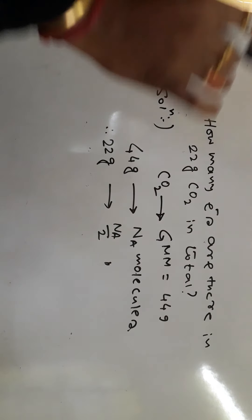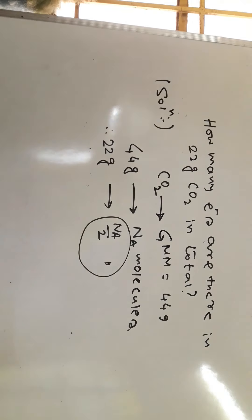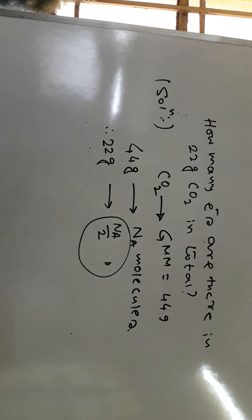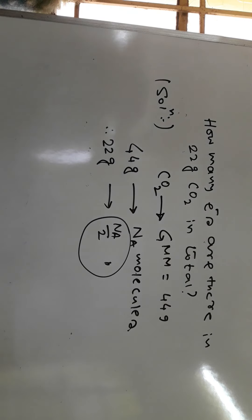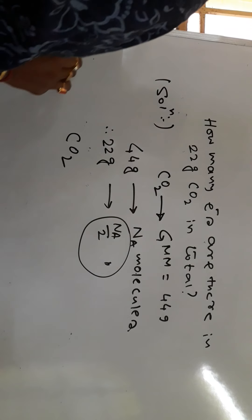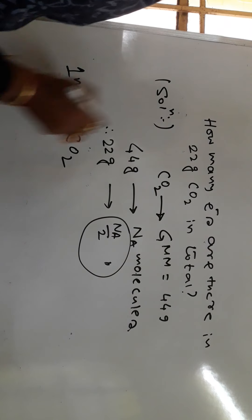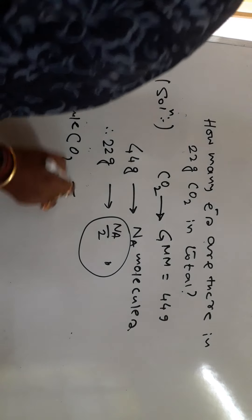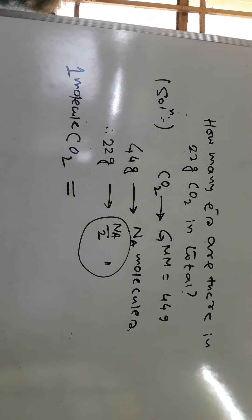We have NA/2 molecules of CO2. Now the main question is finding the electrons. We already know there are NA/2 molecules. In one molecule of CO2: what is the atomic number of carbon? It is 6, meaning one carbon atom has 6 electrons.